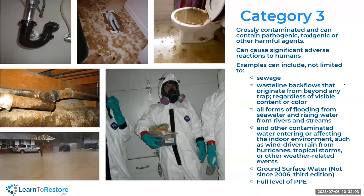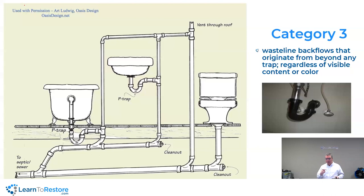Category three is grossly contaminated and can contain pathogenic, toxigenic, and other harmful agents. It can cause severe health reactions or even death if we are not careful and get it in us or on us. Examples include sewage, and wasteline backflows that originate from beyond any trap. Here's the trap we're talking about — I want to explain why it says 'any trap' instead of 'the toilet trap' as it used to say.